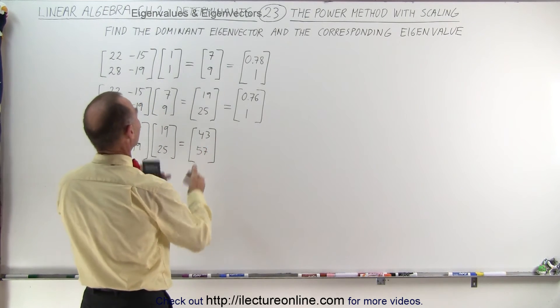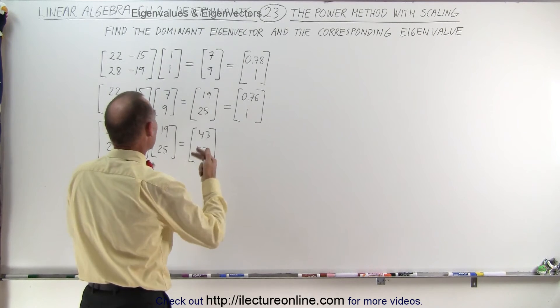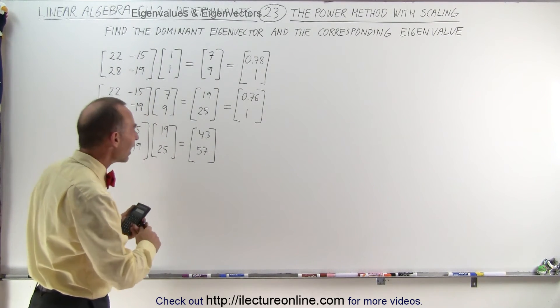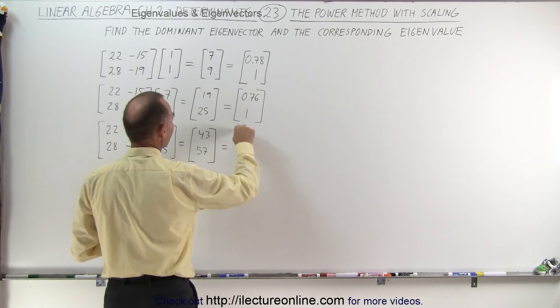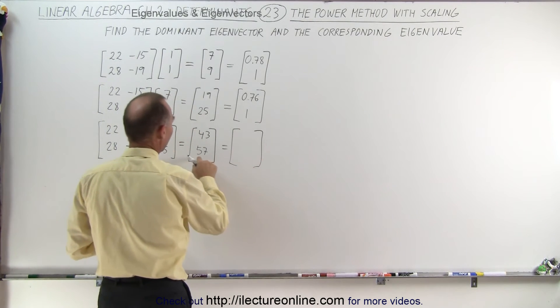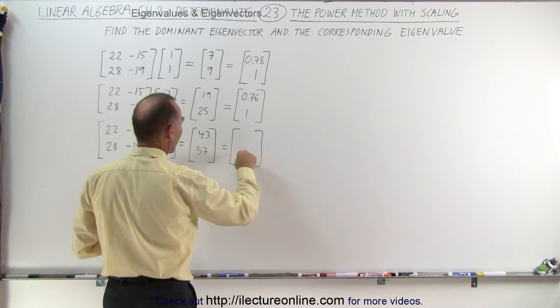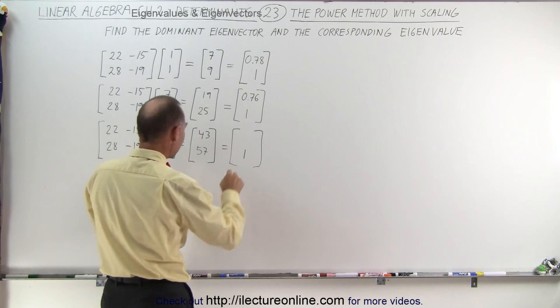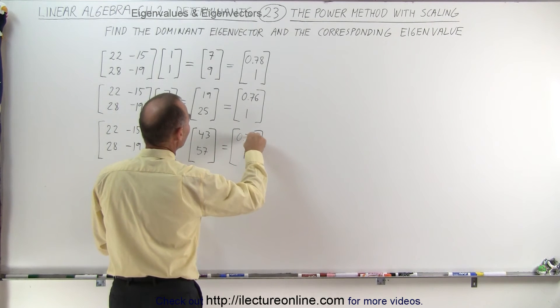Again you take a look at this and you realize that doesn't appear to be converging to anything. Those are 43, 57. What does that mean? But if we scale it down again we can write this as follows. Divide 57 by 57 you get 1. Divide 43 by 57 and you get 0.75.